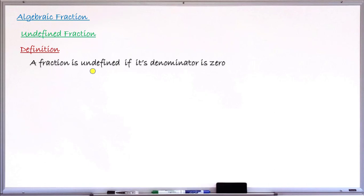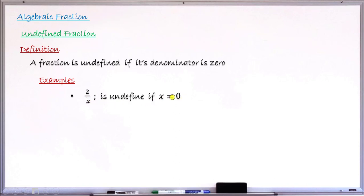Let's see examples of undefined fractions. For example, two over x — this fraction is undefined if x takes the value of zero, because you now have two over zero. You can see the denominator will be zero, so it will be undefined.